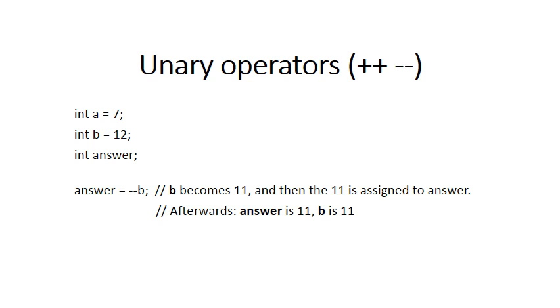Now we've swapped it around, and it says answer is assigned to minus-minus b. Because the minus-minus is before the b, the first thing that is done is the minus-minus is applied to b, so b becomes 11. And then the 11 is assigned to answer. So after this expression, answer will have the value 11 as well as b, which will also be 11.